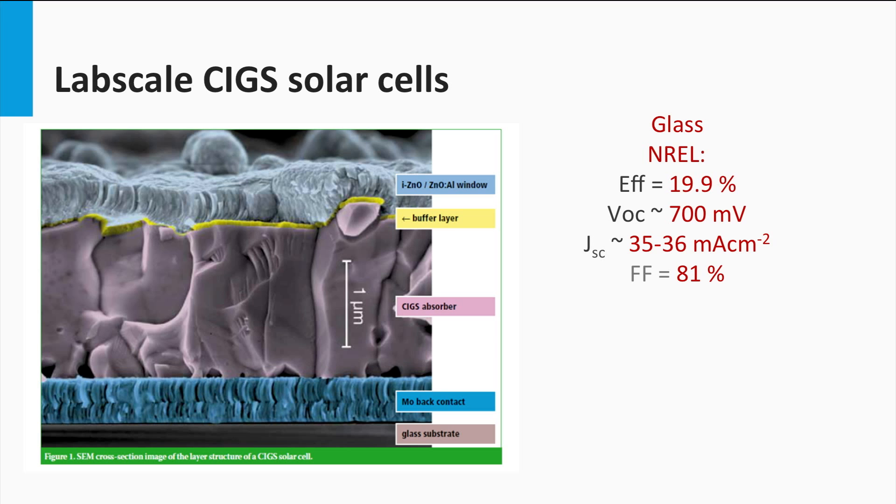Typical open-circuit voltages are close to 700 mV, the fill factor of 81% and short-circuit current density between 35 and 36 mA per square centimeter have been achieved.